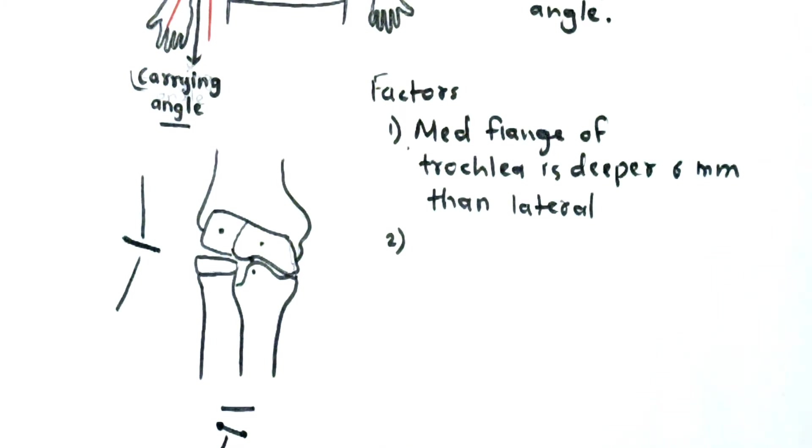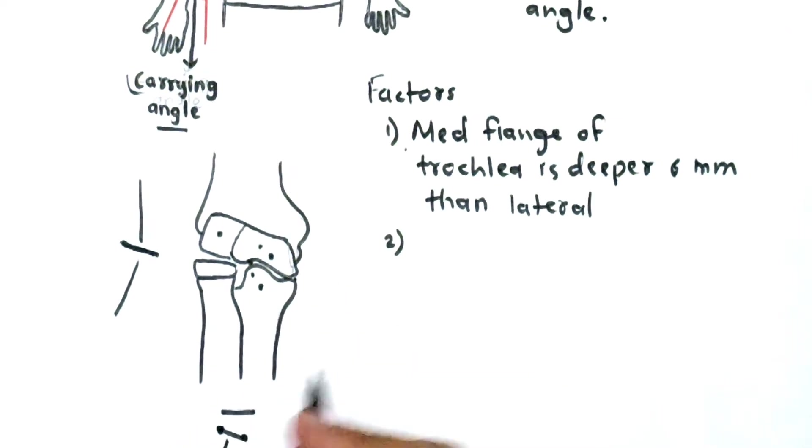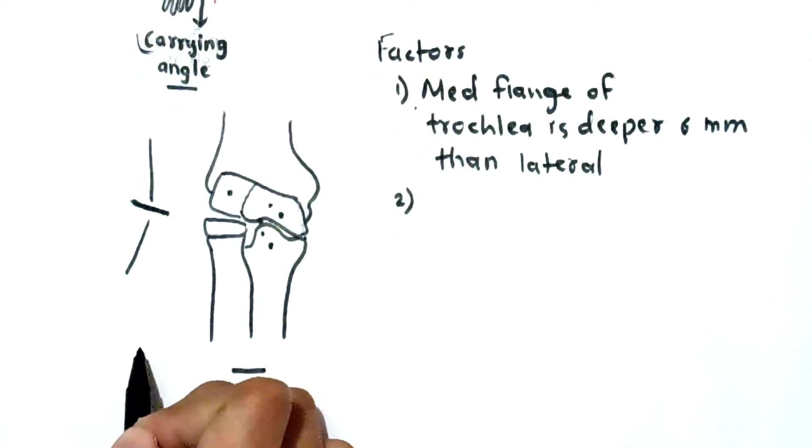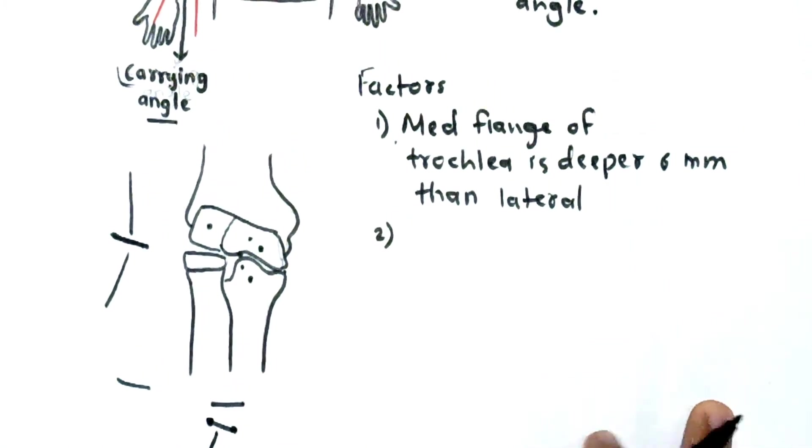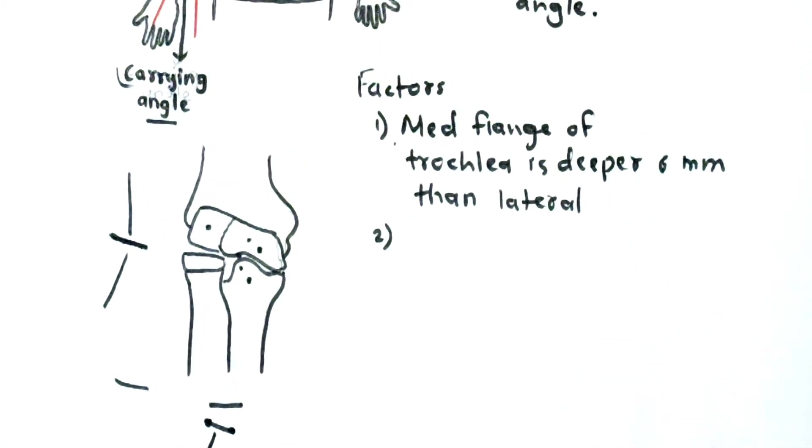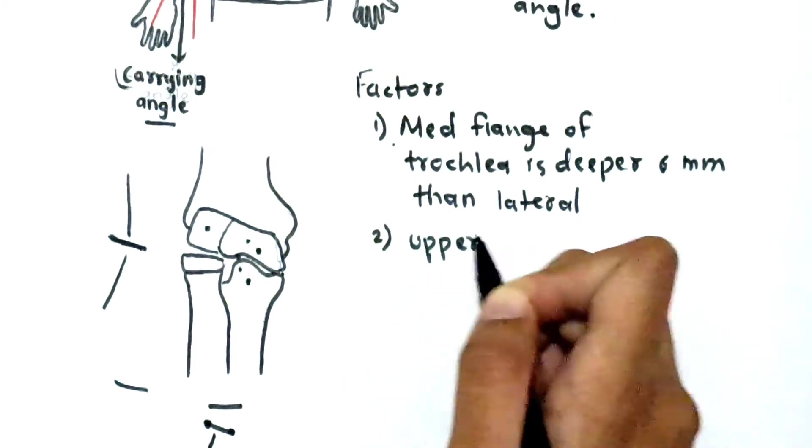And the second point is that the upper surface of ulna is also oblique. So your upper articular surface is also oblique and lower articular surface is also oblique. So that's why it makes the horizontal axis of your elbow oblique, not straight. So this is the main reason, these are the main factors of formation of carrying angle.